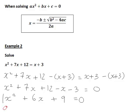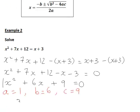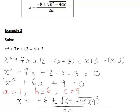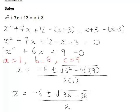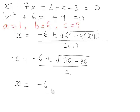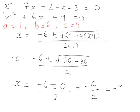This is now in the form ax squared plus bx plus c equals zero, where a equals 1 (the coefficient of x squared), b equals 6 (the coefficient of x), and c equals 9 (the constant term). Substituting into the quadratic formula gives x equal to negative 6 plus or minus the square root of 6 squared minus 4 times 1 times 9, all divided by 2 times 1. This simplifies to negative 6 plus or minus the square root of 36 minus 36, divided by 2, which is the square root of zero — so x equals negative 6 divided by 2, giving x equals negative 3.